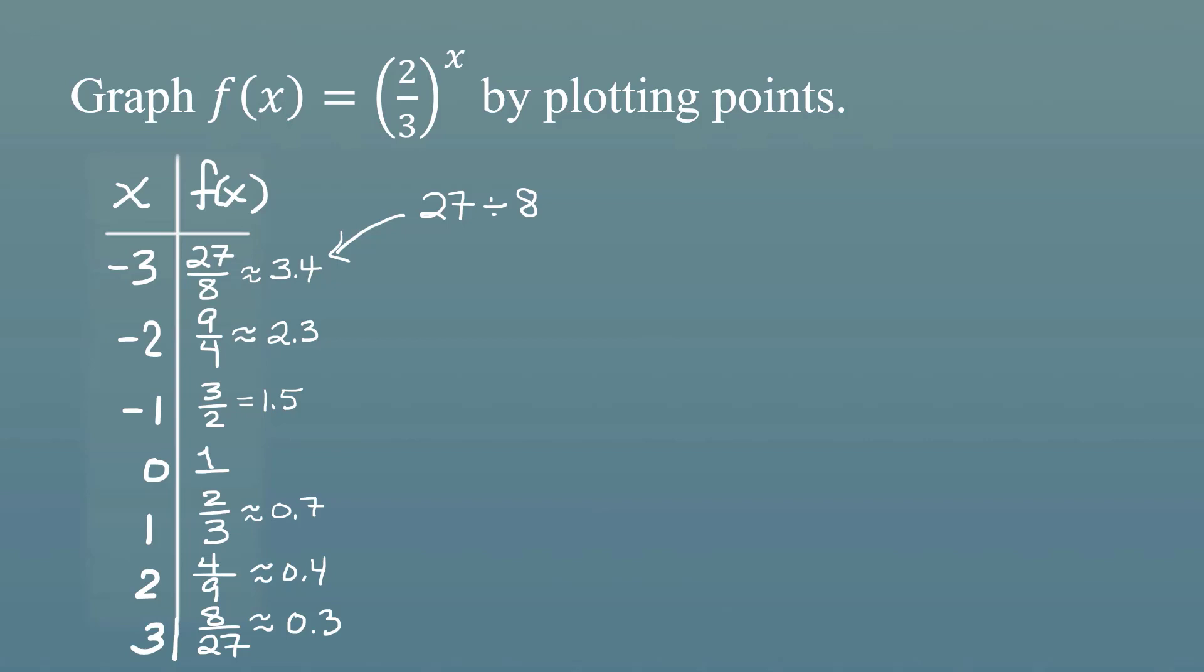Now before we start plotting points, it's usually easier to think in terms of decimals. So we can go ahead and divide 27 by 8 on our calculator and see that it's about 3.4. And we'll do this for all of our fractions so that we have an easier time figuring out where the point is located on our graph.